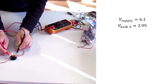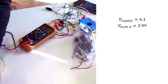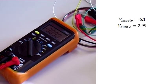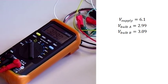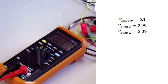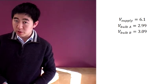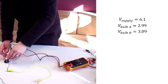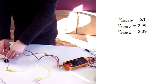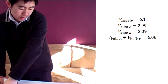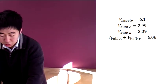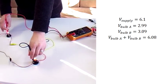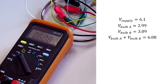And if I do the same with this, the negative indicates that I've got the polarity switched, which doesn't matter. I'm just interested in the number. I've got 3.09. What do you notice? You notice that 3.09 plus 2.99 is approximately equal to the supply voltage, 6.08. No, 6.08.